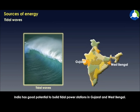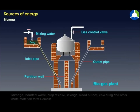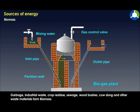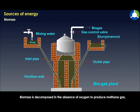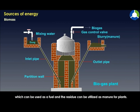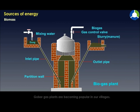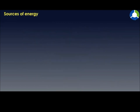Biomass: garbage, industrial waste, crop residue, sewage, wood, bushes, cow dung, and other waste materials form biomass. Biomass is decomposed in the absence of oxygen to produce methane gas, which can be used as a fuel, and the residue can be utilized as manure for plants.